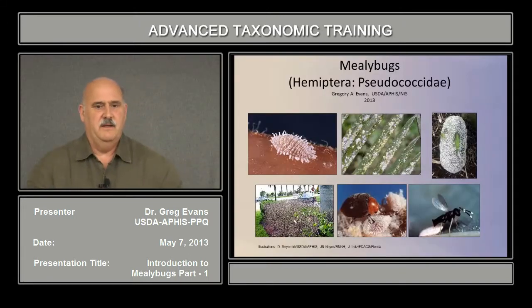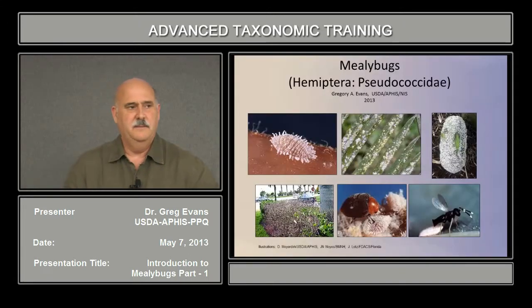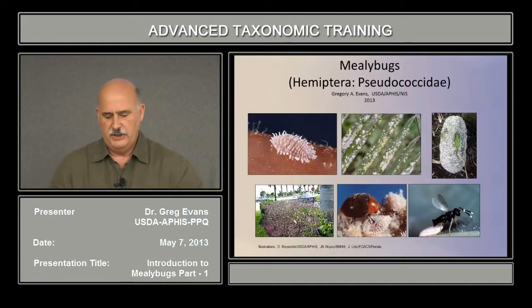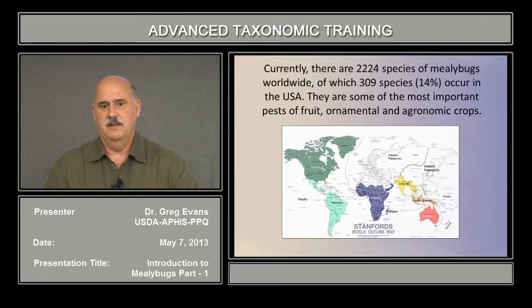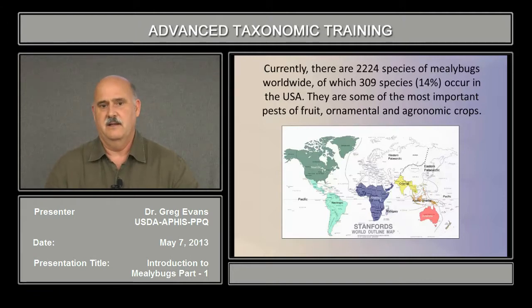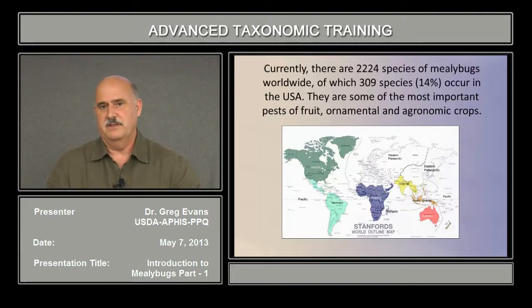Today we're going to be talking about mealybug identification. Currently there are over 2,200 species of mealybugs, making it the second largest family of scale insects, of which 309 species — 14% — occur in the United States.